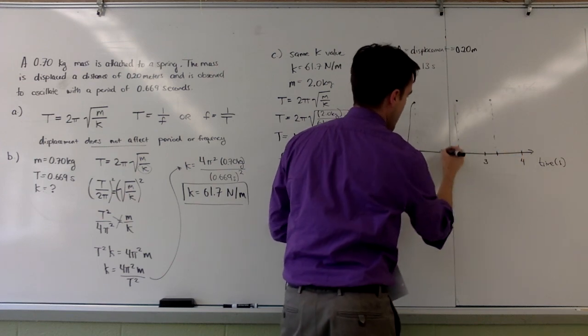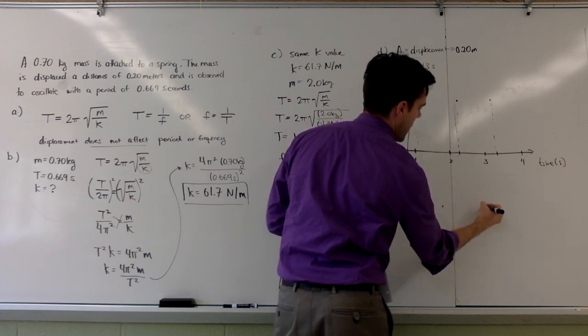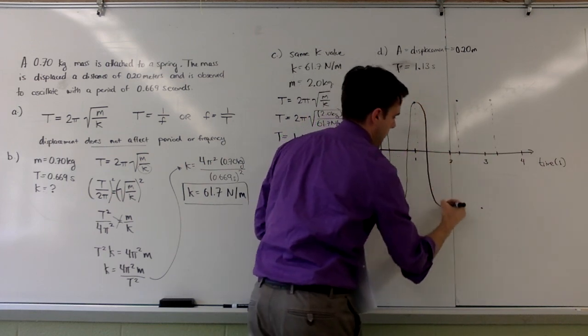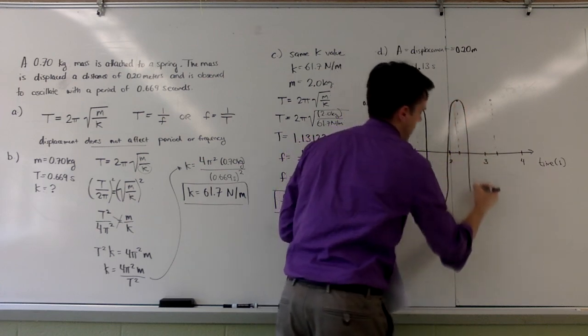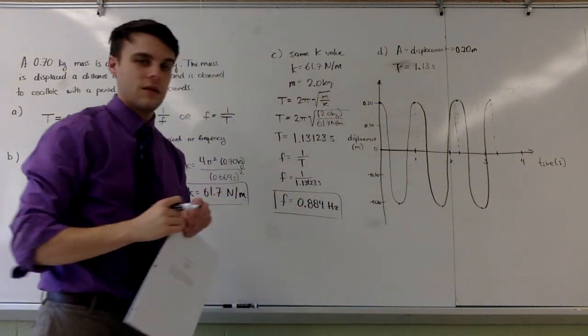And then halfway in between, each of these will be my trough. So, my final graph will look something like this. And that's my graph.